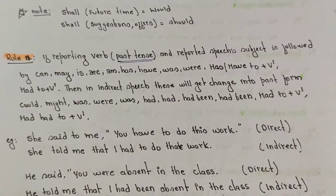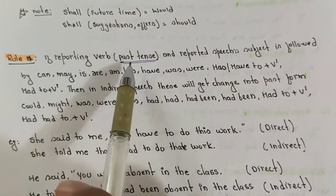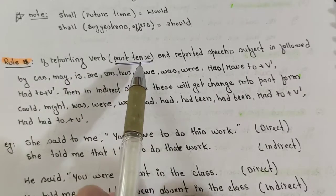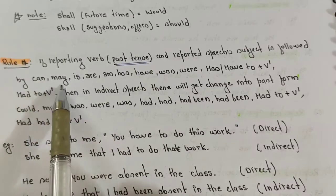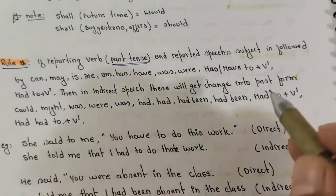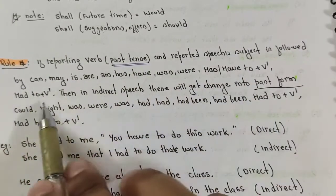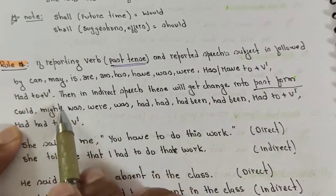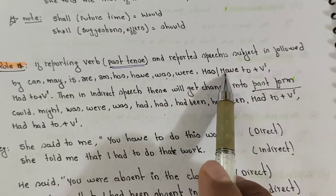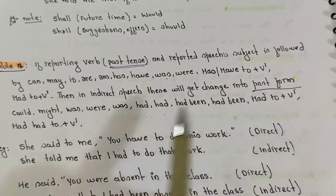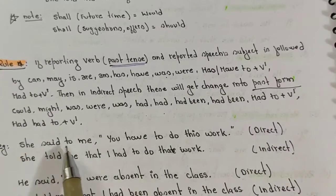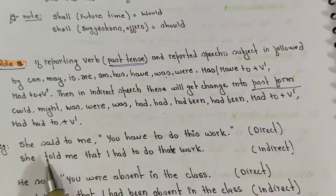Rule number four: if the reporting verb is in past tense and the reported speech subject is followed by 'can', 'may', 'is', 'are', 'am', 'has', 'have', then these change into their past forms: 'can' → 'could', 'may' → 'might', 'is/am' → 'was', 'are' → 'were', 'has/have' → 'had', 'has been' → 'had been', 'have to' → 'had to'.